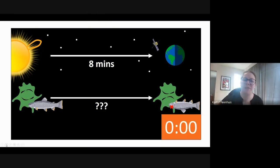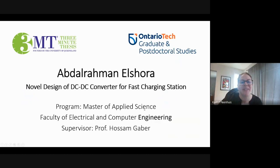Okay, I'll introduce our next participant, Abdulrahman El-Shora, who is pursuing Master of Applied Science in Electrical and Computer Engineering, presenting novel design of DC-DC converter for fast charging station. Abdulrahman is an Egyptian Master's student of Electrical Engineering, interested in power electronics, renewable energy, and volunteering work. He was a member of the electric team of the Invictus ROV team that won fourth place in the world at the ROV competition. His hobbies are playing soccer and reading. Please welcome Abdulrahman.